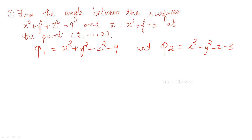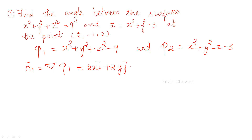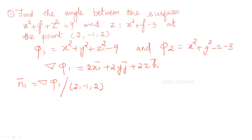How will you find out the normal to the surface? Del phi will give you the normal to the surface. So n1-bar equals del phi1. Let us find out del phi1 first: that is 2xi + 2yj + 2zk. Then n1-bar = del phi1 at the point (2, −1, 2), substituting x=2, y=−1, z=2, giving 4i − 2j + 4k. This is our n1-bar.